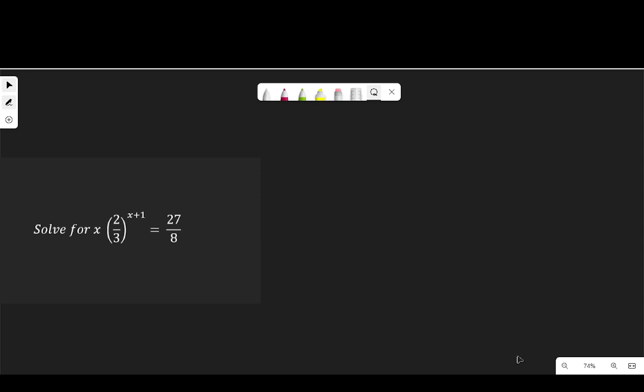Hello. In this video, we are going to solve this question which says 2 over 3 to the power of x plus 1 is equal to 27 over 8. Let's get into it right away.